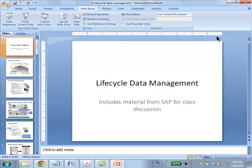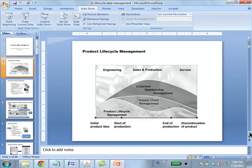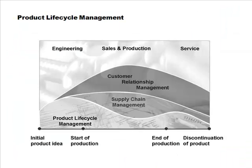That completes the discussion of this chapter on lifecycle data management. A student asked for a 30,000-foot view of the chapter. The answer is that there are many different unrelated things crammed into one chapter. All of them have some peripheral relationship with product lifecycle management. The classification system, for example, doesn't directly relate to lifecycle management.